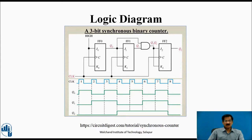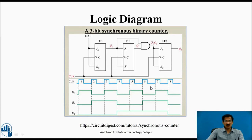With these expressions, we can implement the logic circuit with three flip-flops FF0, FF1, FF2. J0 and K0 are connected to logic high (1), J1 and K1 are connected to Q0, and J2 and K2 are connected to Q0·Q1 — the AND of Q0 and Q1.